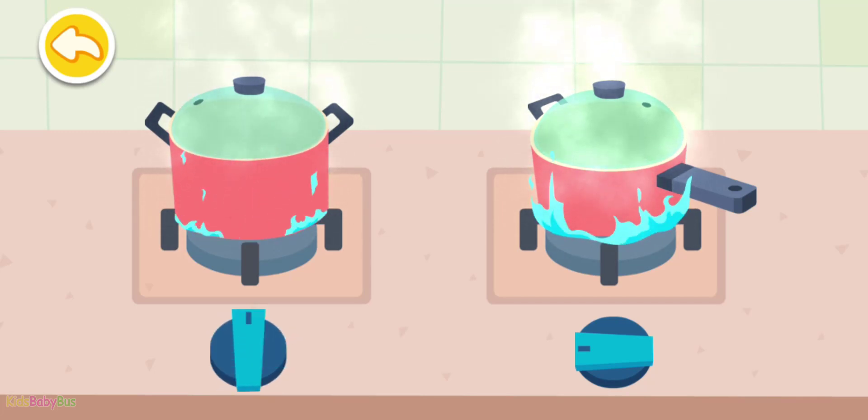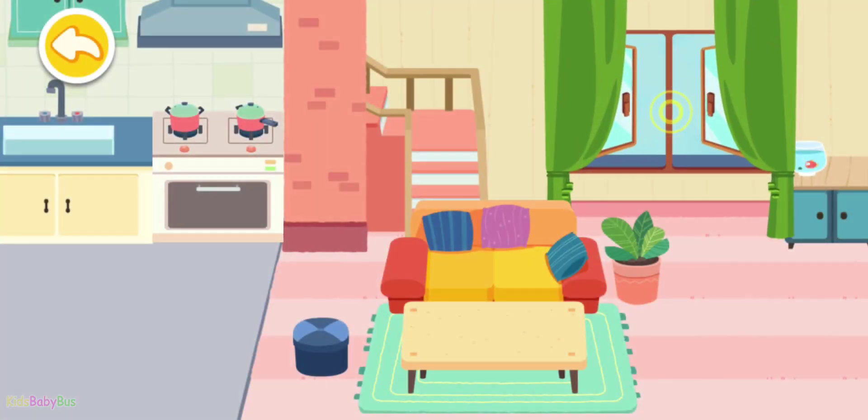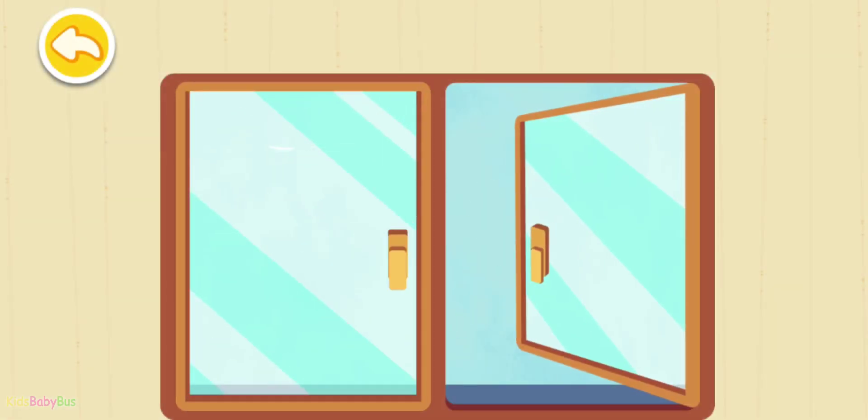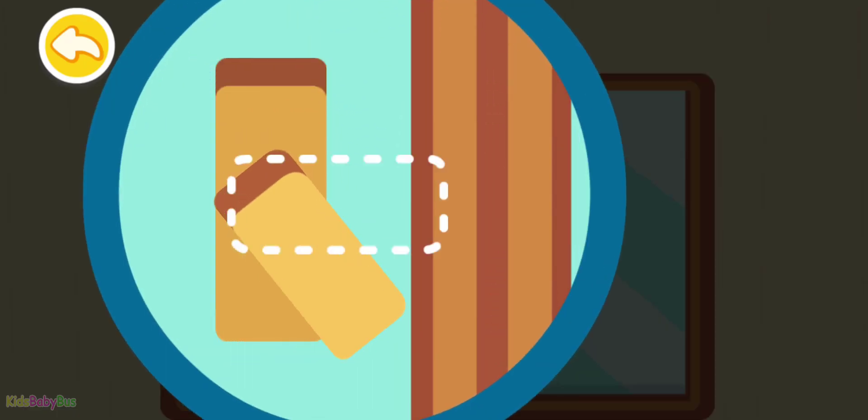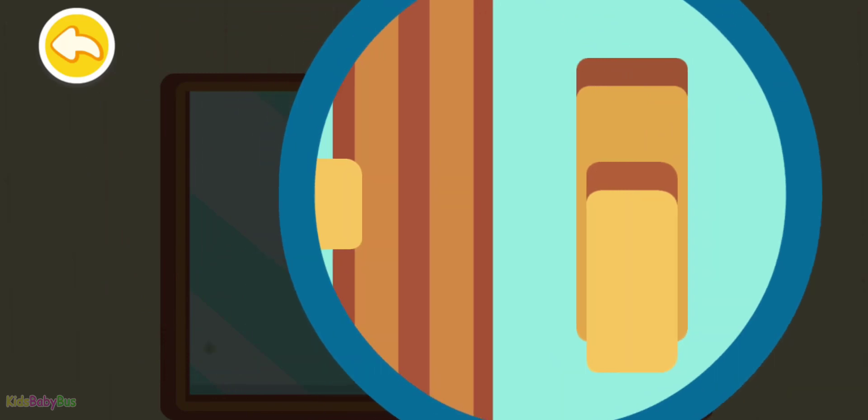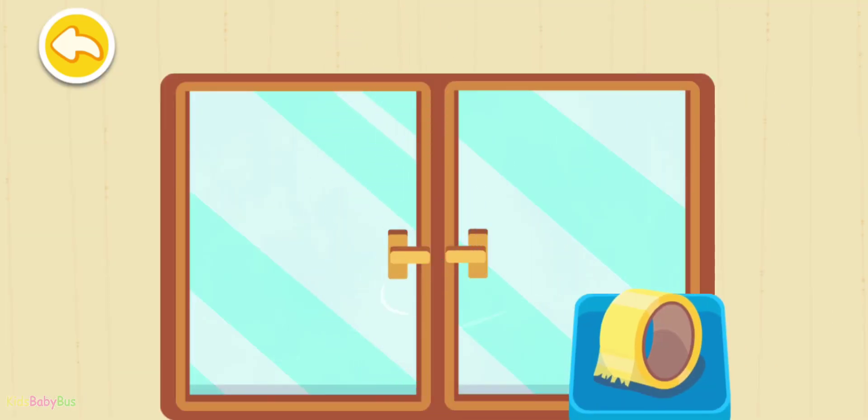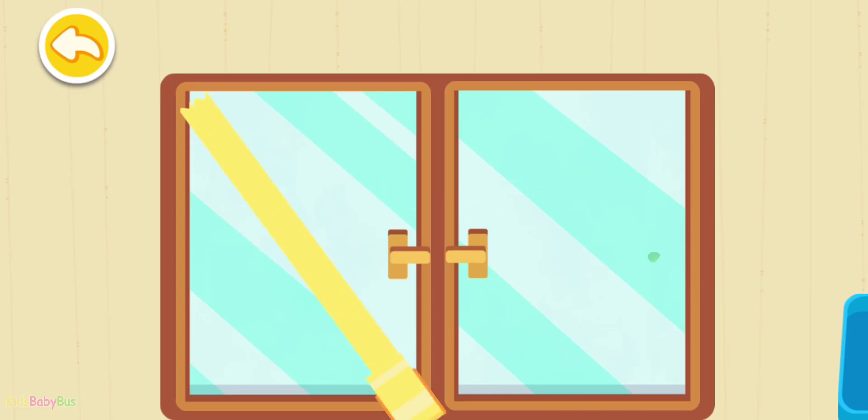Flames are dangerous during a hurricane. So turn the stove off quickly. Close the window quickly. Tape the window. Tape a double X shape to prevent the window from being shattered by gale.